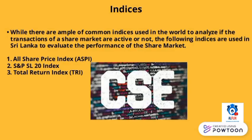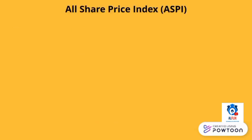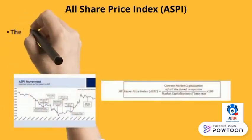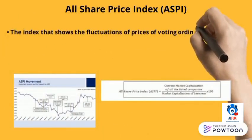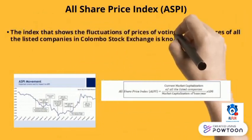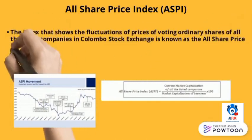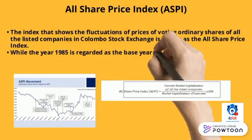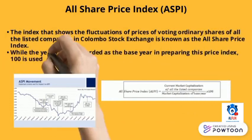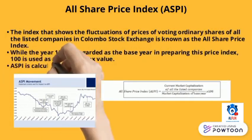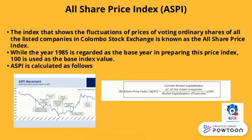All Share Price Index, S&P SL 20 Index, and Total Return Index. Now let's look into each of them. The All Share Price Index is the index that shows the fluctuations of prices of voting ordinary shares of all the listed companies in the Colombo Stock Exchange. The year 1985 is regarded as the base year, and 100 is used as the base index value. The ASPI is calculated as follows.